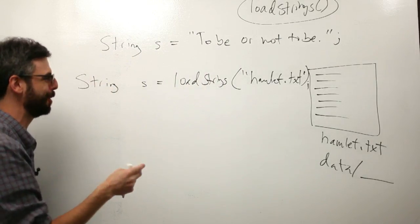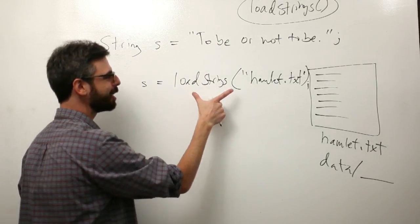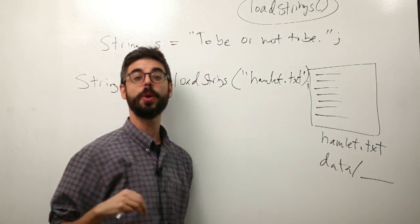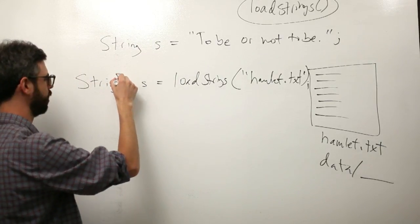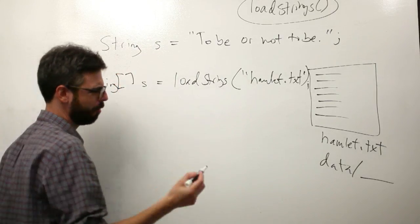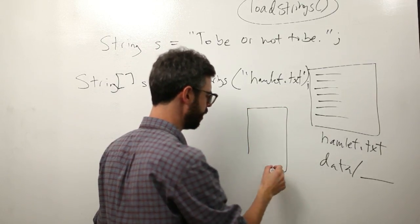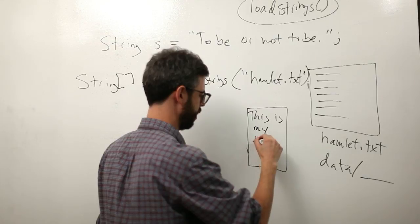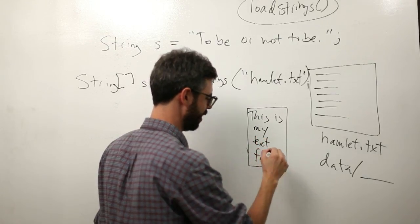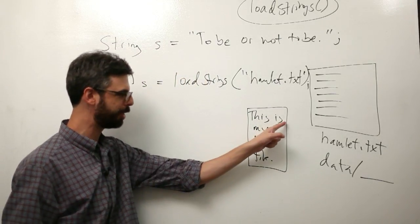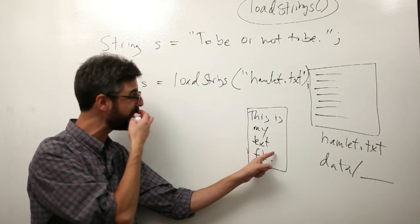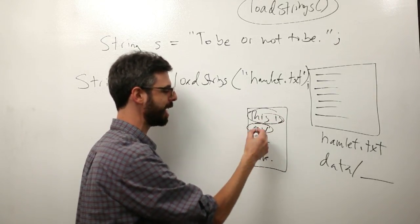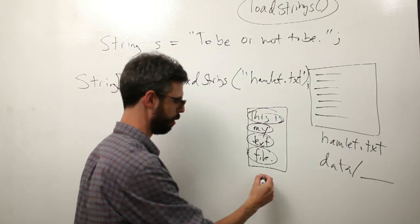What is that thing? LoadStrings actually takes a text file and loads it into an array of strings. Why an array? Why would it ever possibly be an array? Well let's say this is my text file. Each one of these is a line break or carriage return.